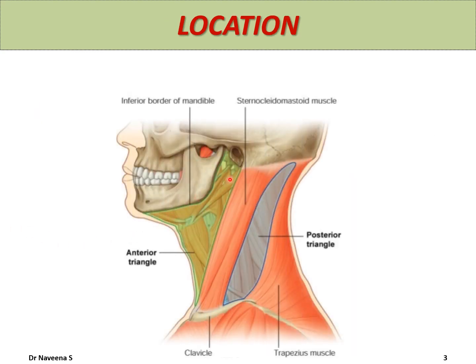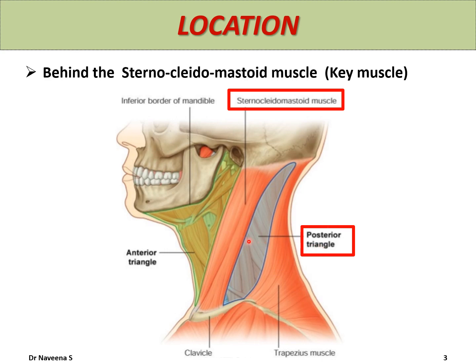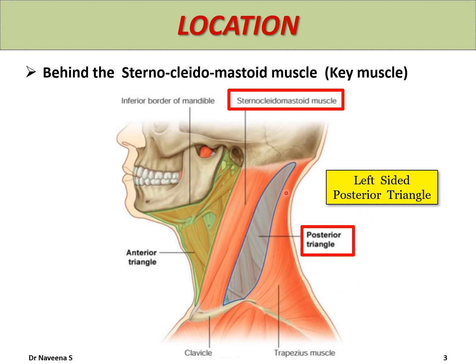The lateral side of the neck is quadrilateral in shape. It is divided diagonally by the sternocleidomastoid muscle into two triangles — anterior triangle and posterior triangle — which means the posterior triangle lies behind the sternocleidomastoid muscle, which acts as a key muscle on the lateral side of neck. In further slides, we will consider the left-sided posterior triangle to study its features in detail.